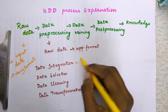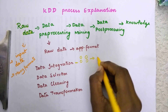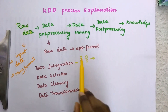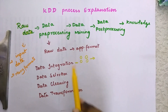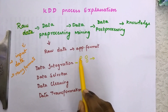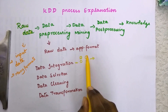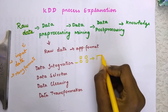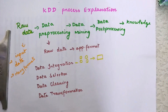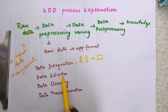In data integration, it will combine all the data sources. For example, take four branches of the same company — we are collecting the data of the first branch, second branch, third branch, and fourth branch, and we are going to combine all these branches into a single file.